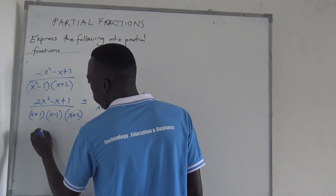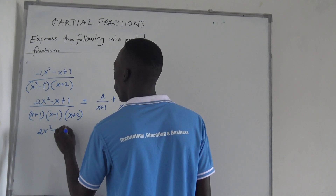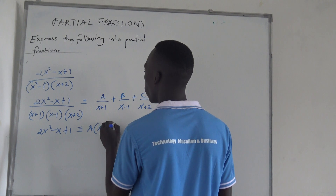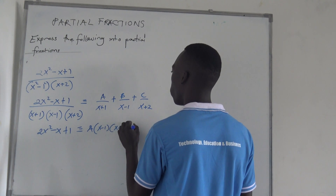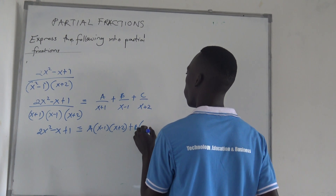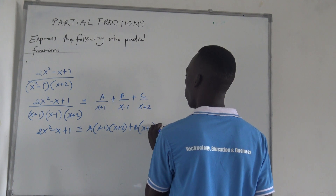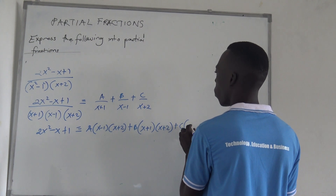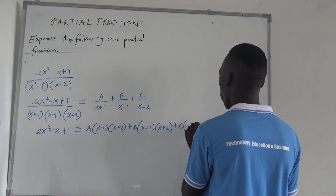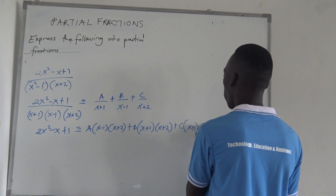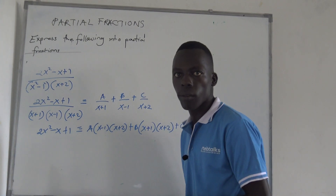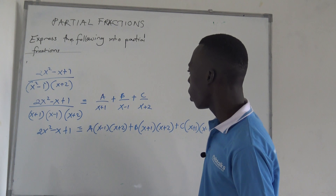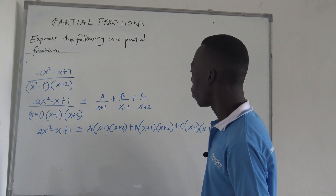Since all factors are now linear, we express it as: A over x plus 1, plus B over x minus 1, plus C over x plus 2. Multiplying through by the LCM gives: 2x squared minus x plus 1 equals A times x minus 1 times x plus 2, plus B times x plus 1 times x plus 2, plus C times x plus 1 times x minus 1. We now find values of A, B, and C.